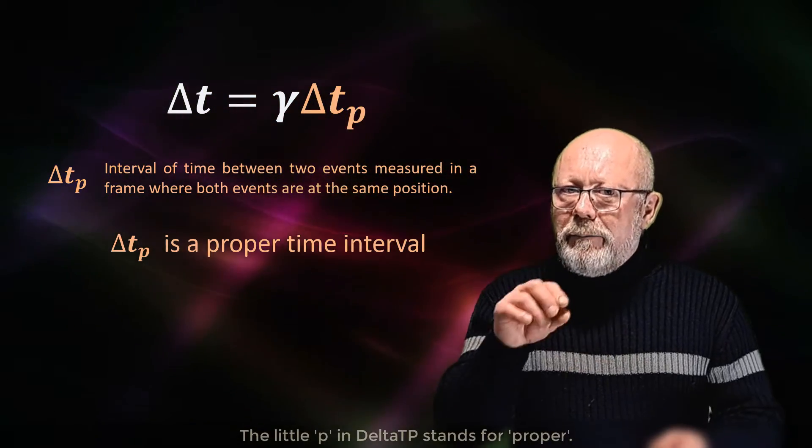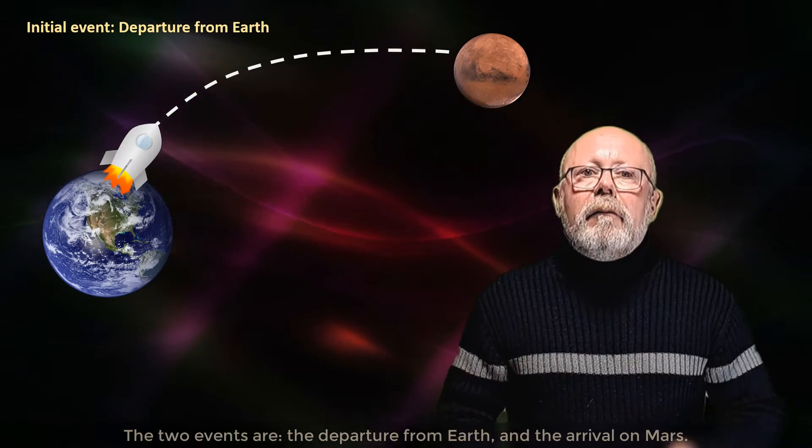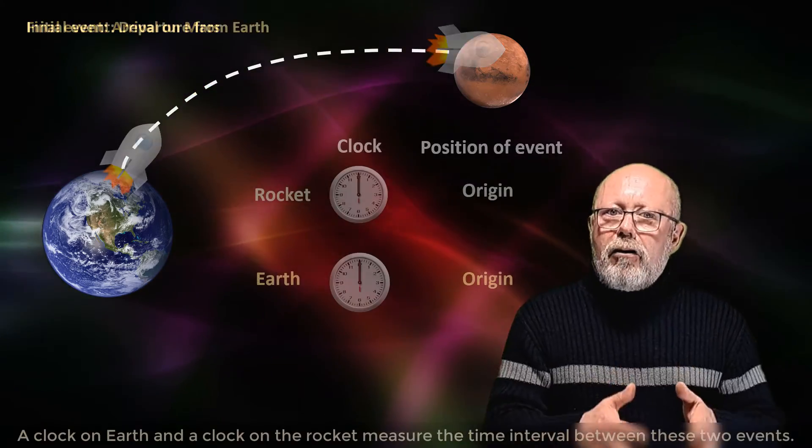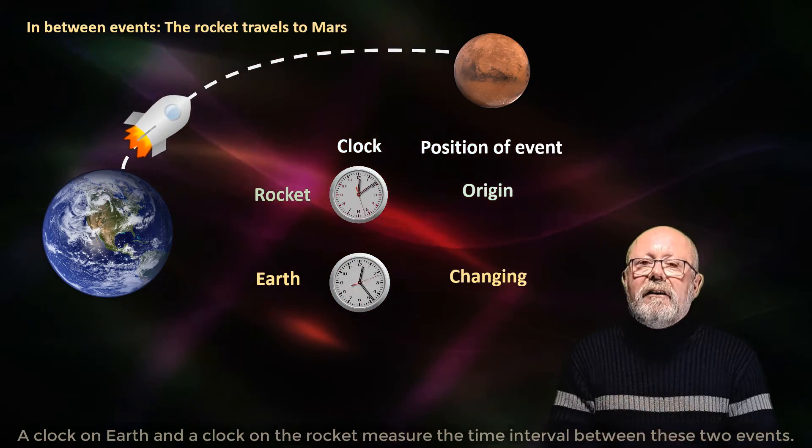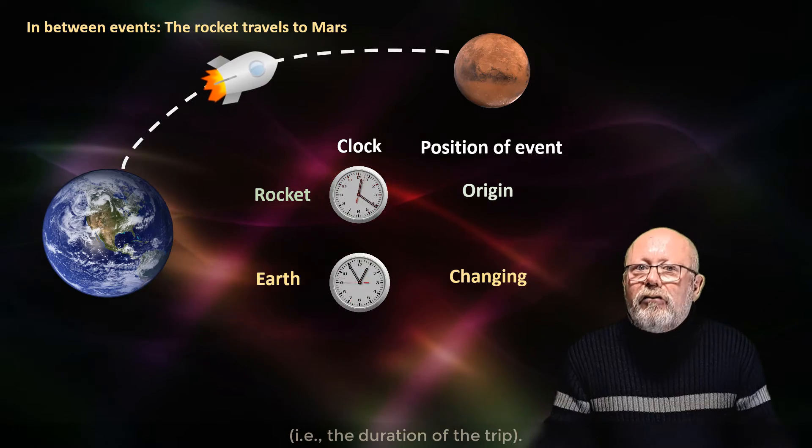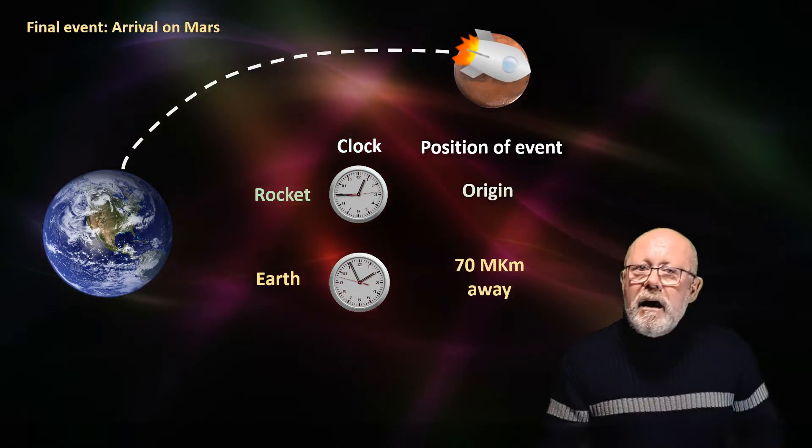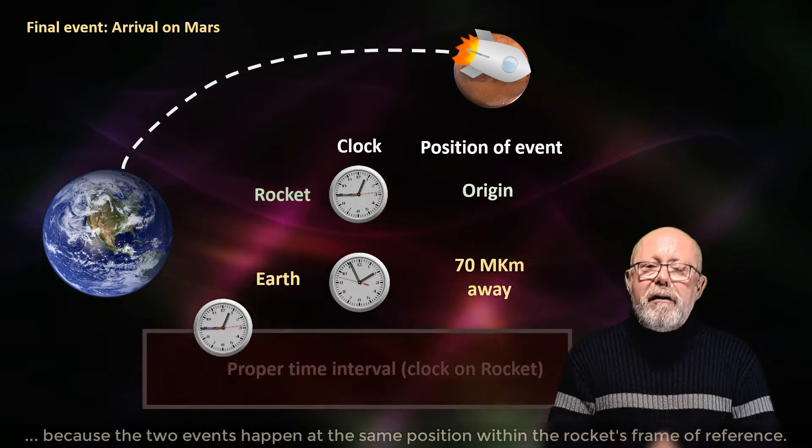The little p in delta t_p stands for proper. For example, a rocket flies from Earth to Mars. The two events are the departure from Earth and the arrival on Mars. A clock on Earth and a clock on the rocket measure the time interval between these two events, i.e. the duration of the trip. The proper time interval will be the time interval measured by the clock on the rocket, because the two events happen at the same position within the rocket's frame of reference.